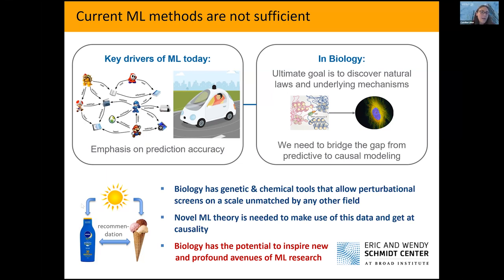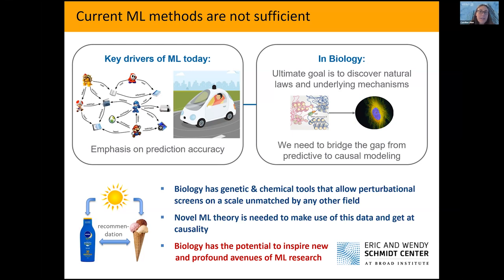If you think of a recommender system, for example, it's probably not that important that you understand why if someone is interested in sunscreen, this person might also be interested in ice cream. They don't really need to understand the underlying mechanisms. Whereas in the biomedical field, the ultimate goal is often to get at mechanisms — to understand how genes regulate each other, which protein is malfunctioning in a particular disease context. So we really need to go from purely prediction to actually understanding something about the underlying causal mechanisms.